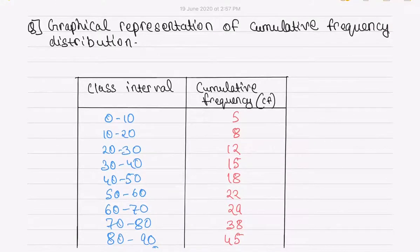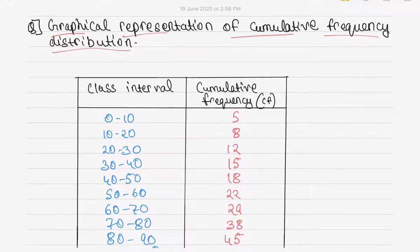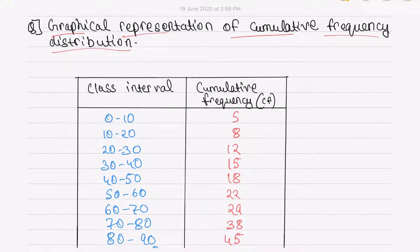Hello students, as of now we have seen what is mean, mode, and median. In this video we will be seeing graphical representation of cumulative frequency distribution. As you might remember, previously we have drawn a cumulative frequency table and calculated the median from that. Here I will be telling you how to draw a cumulative frequency curve, which is also called an ogive, and we will also be finding the median via graphical method.